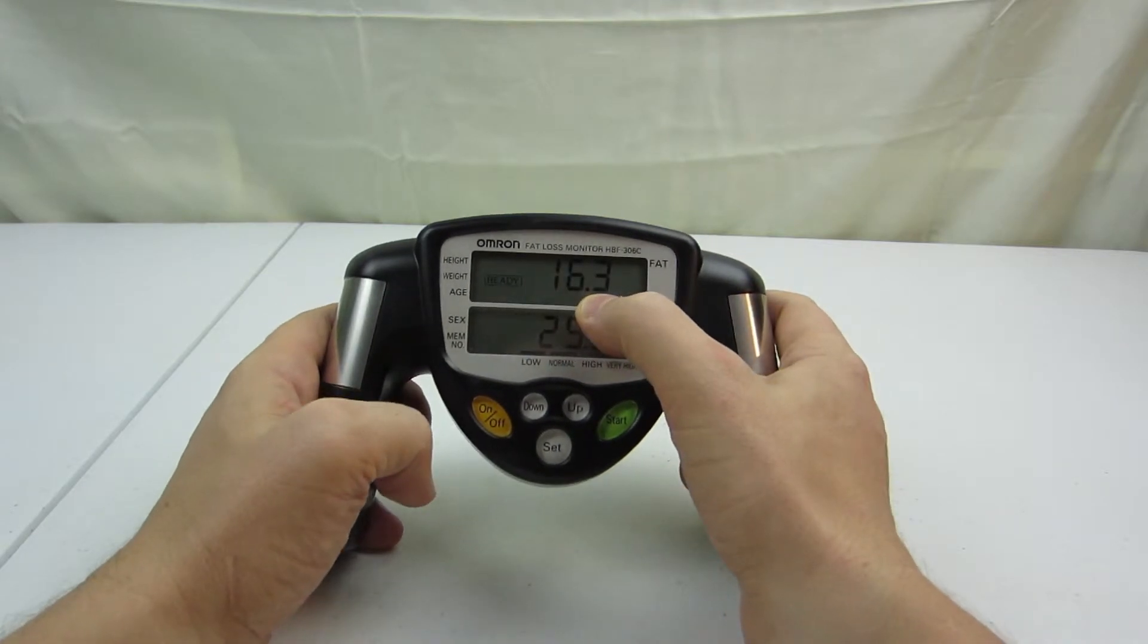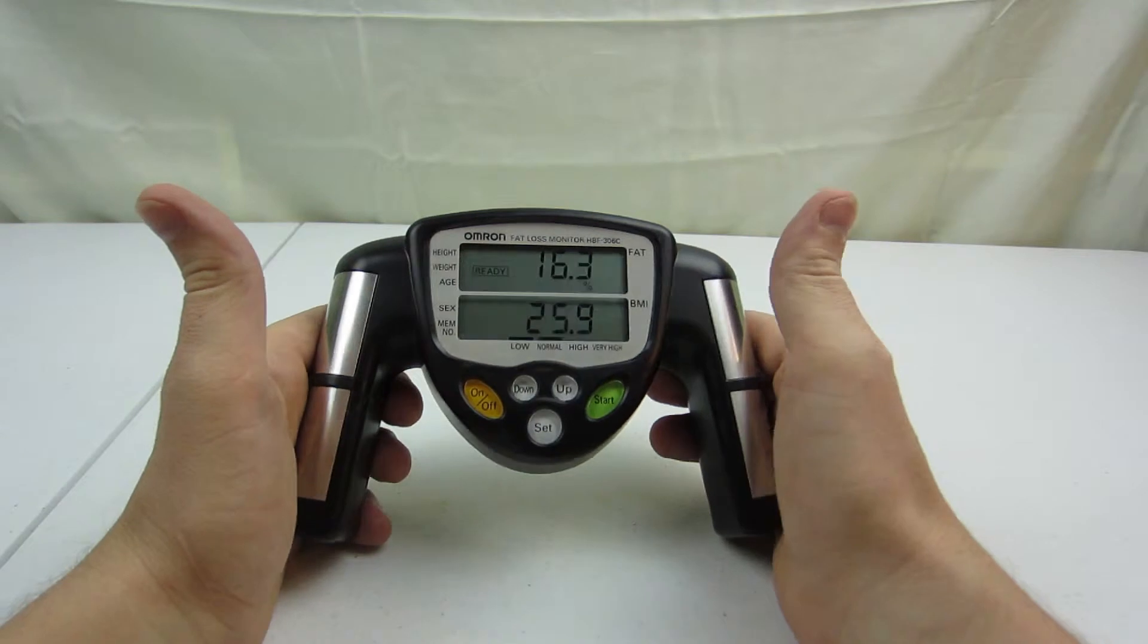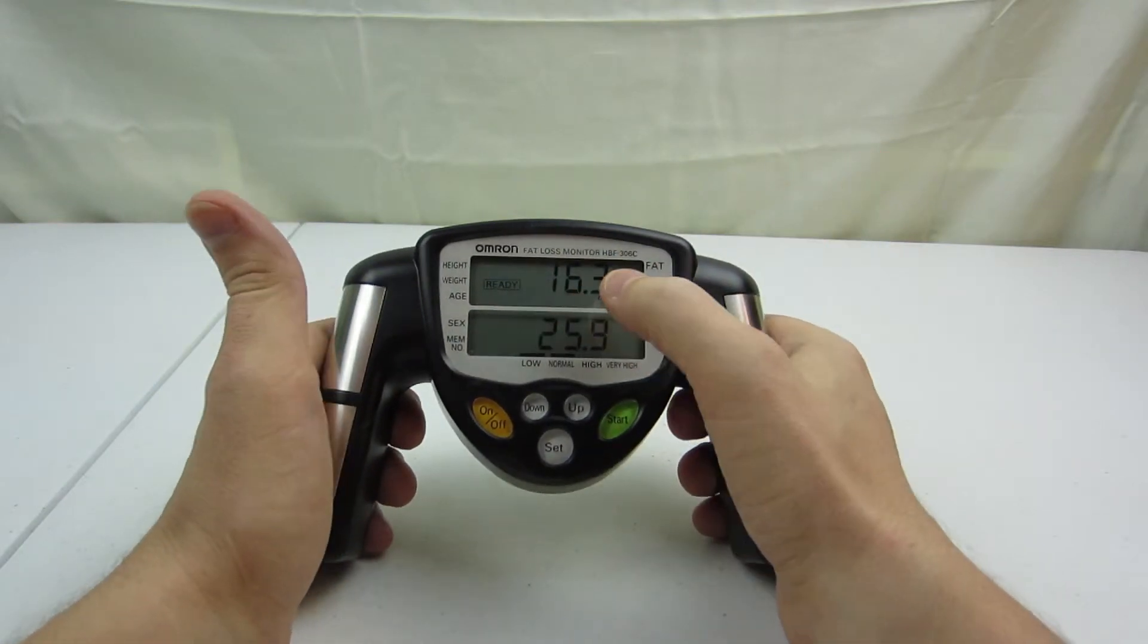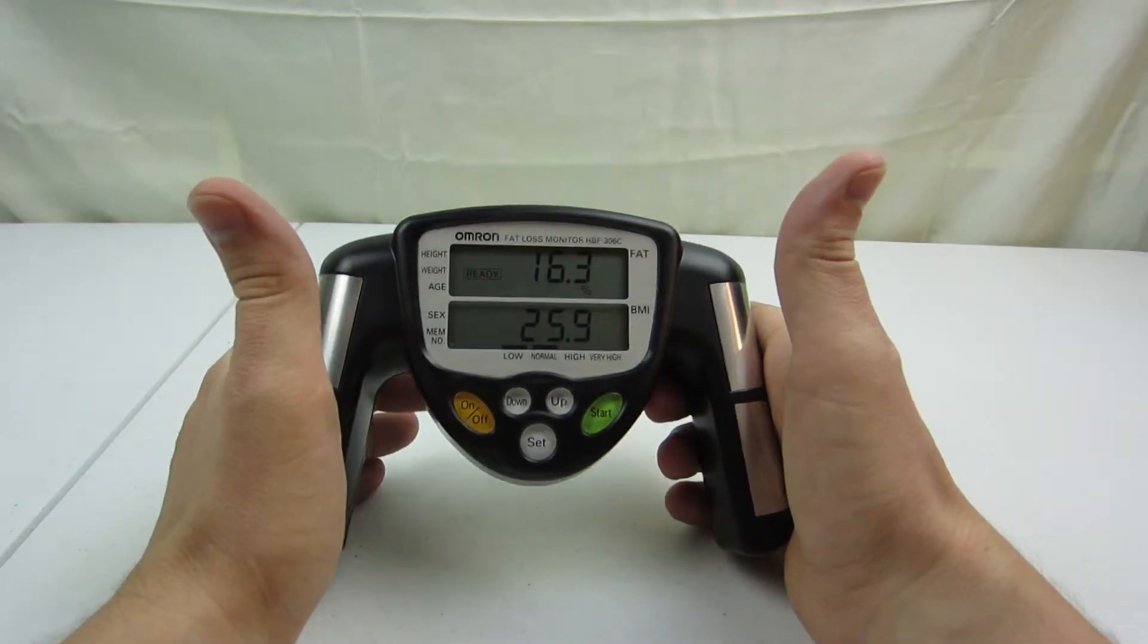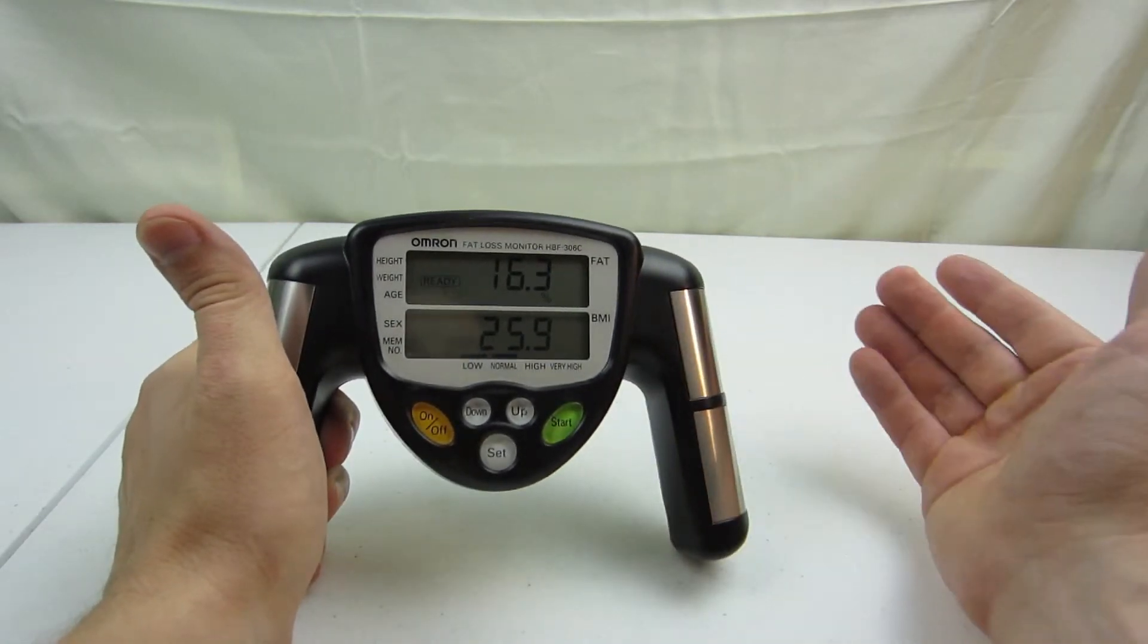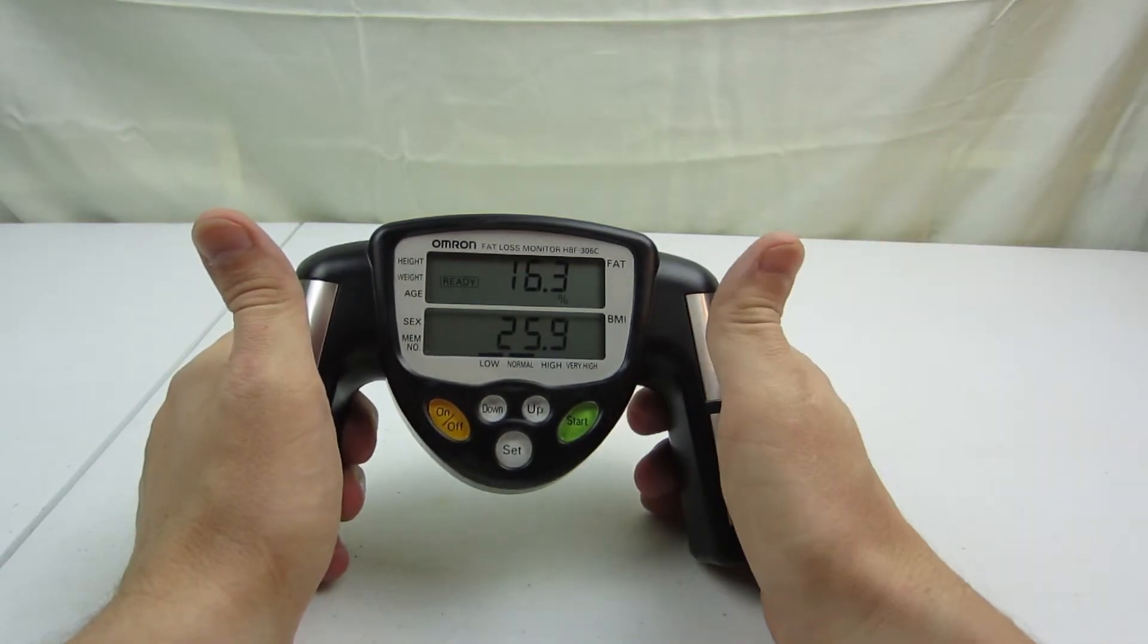That number there what you see is obviously an estimate. Now if I were to hit the button again and scan again, it'll give me something like 16.2 or 16.4. It's generally within 0.1, so that's how precise it is, how repeatable the measurement is. It is very repeatable.